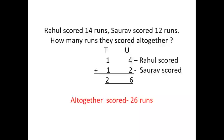Rahul scored 14 runs and Saurav scored 12 runs. How many runs did they score altogether? First number 14: 1 ten, 4 units. Second number 12: 1 ten, 2 units. Plus sign. See the units side: 2 fingers, 4 in mind. After 4: 5, 6. Now see the tens side: 1 plus 1 is 2. They scored altogether 26 runs.